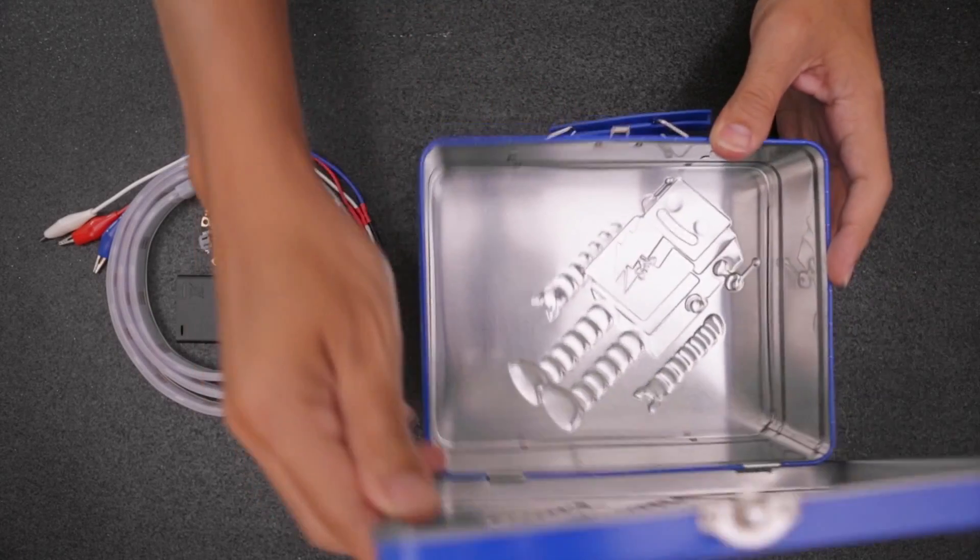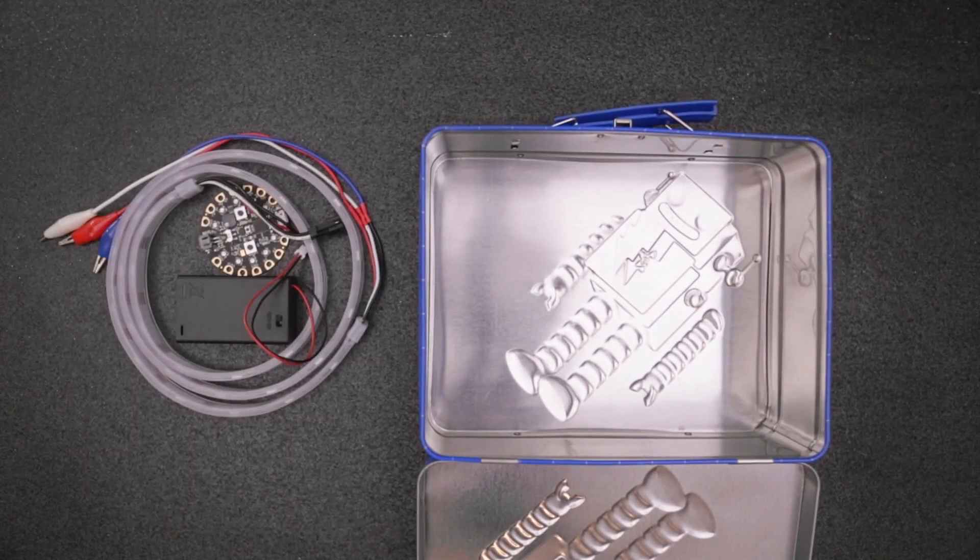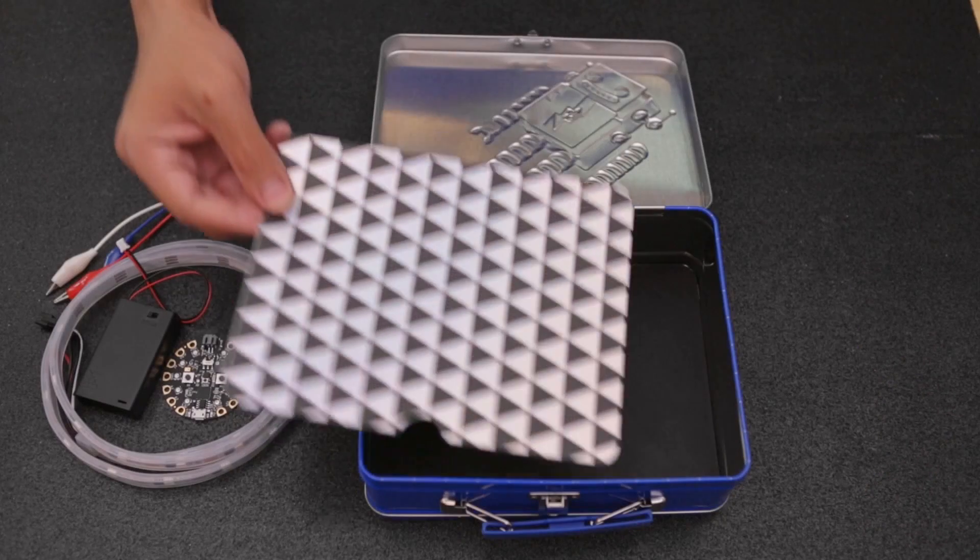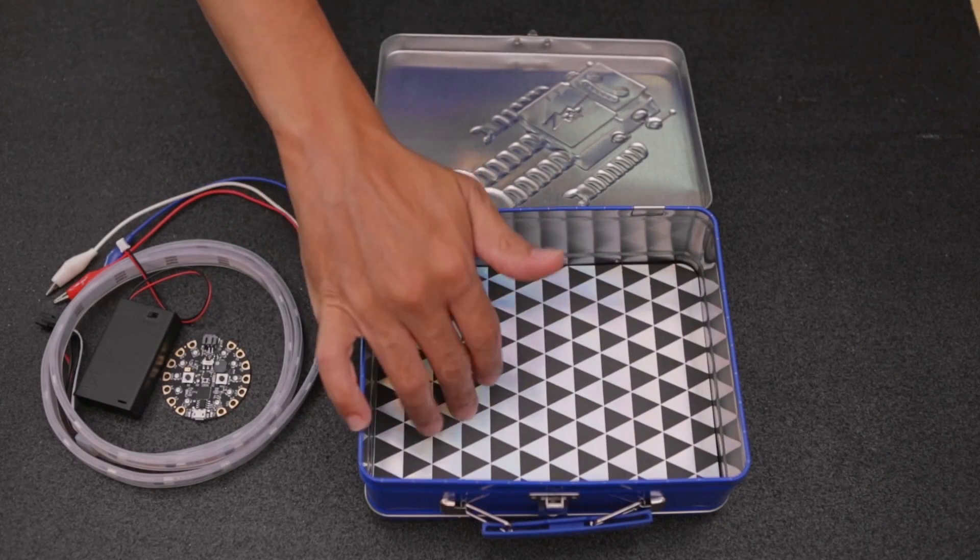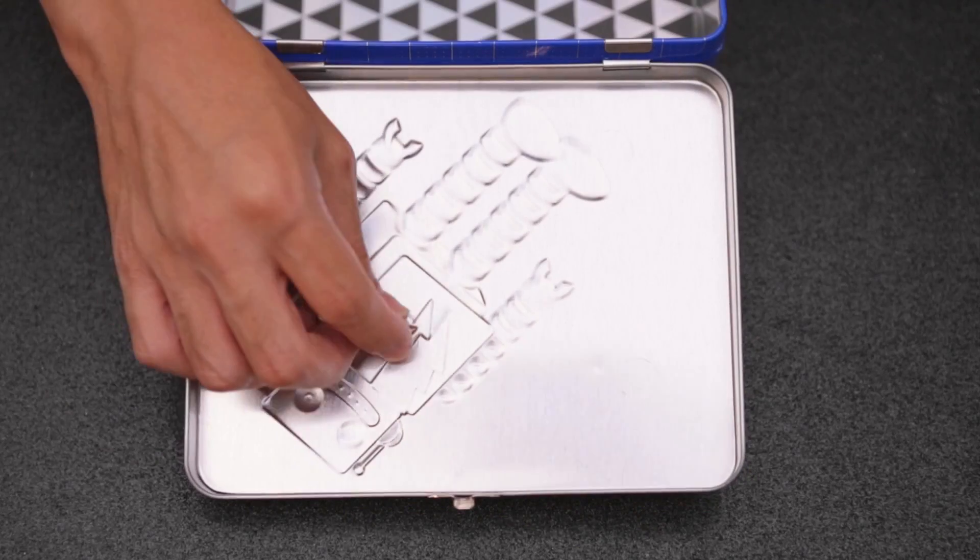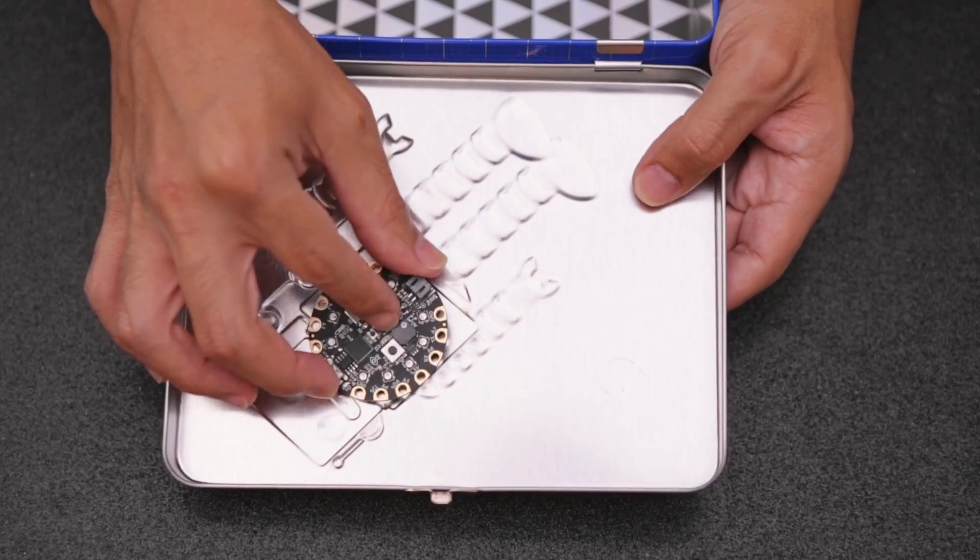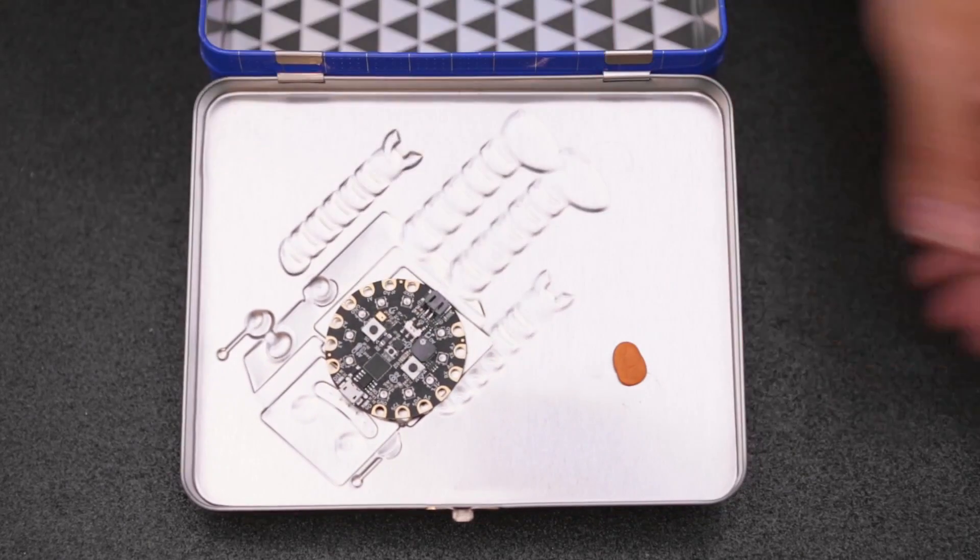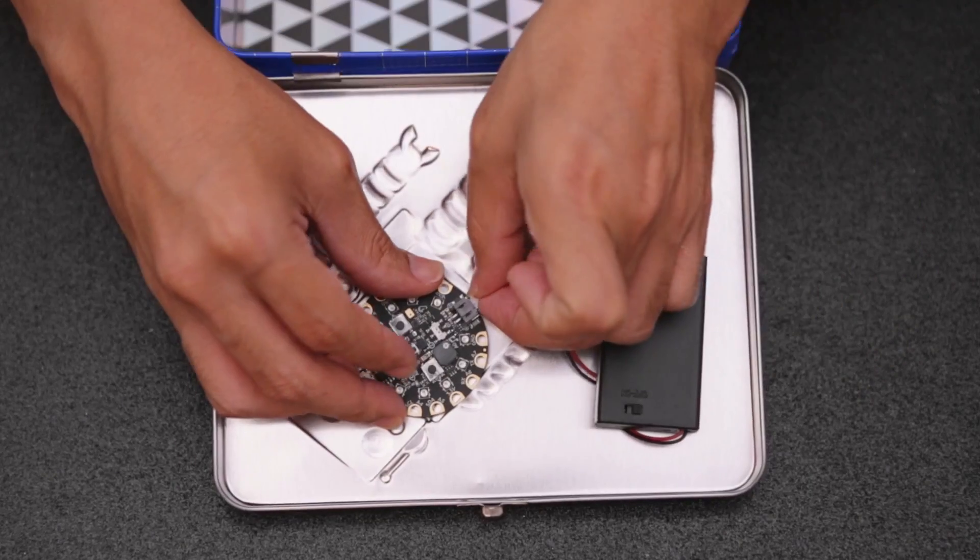Now we can work on setting up the lunchbox. You can cut out a mat to cover up the bottom and this will help keep things nice and clean. Use mounting putty to tack down the Circuit Playground Express and battery pack. You can place them inside the cover and plug in the battery directly into the board.